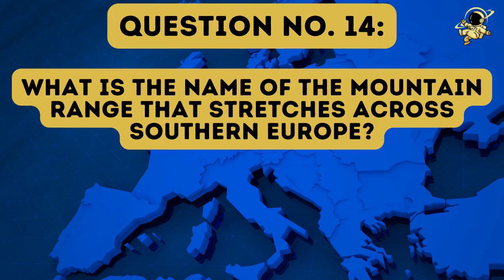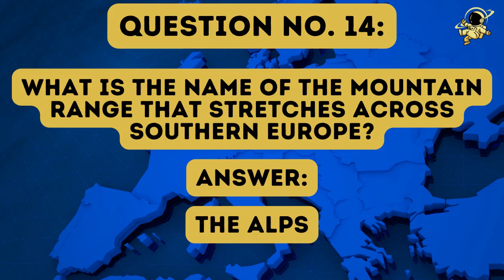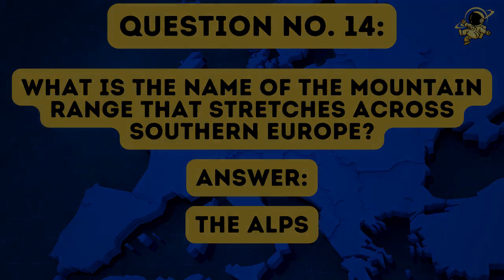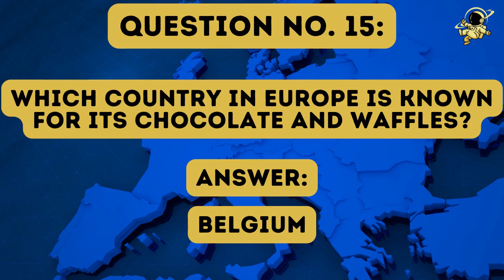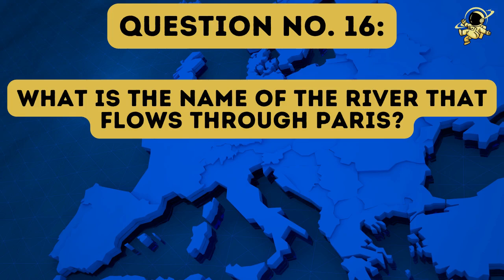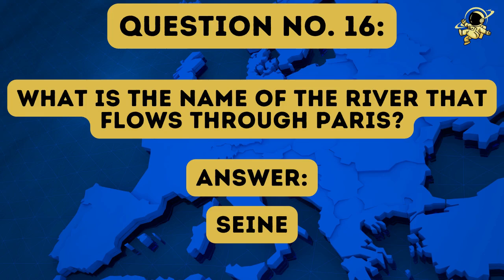And then we come to question number fourteen: What is the name of the mountain range that stretches across southern Europe? And the answer to question number fourteen is the Alps — it goes through several countries. And then we come to question number fifteen: Which country in Europe is known for its chocolate and waffles? And the delicious answer to question number fifteen is Belgium. And then we have question number sixteen: What is the name of the river that flows through Paris? And the answer to question number sixteen is the Seine.